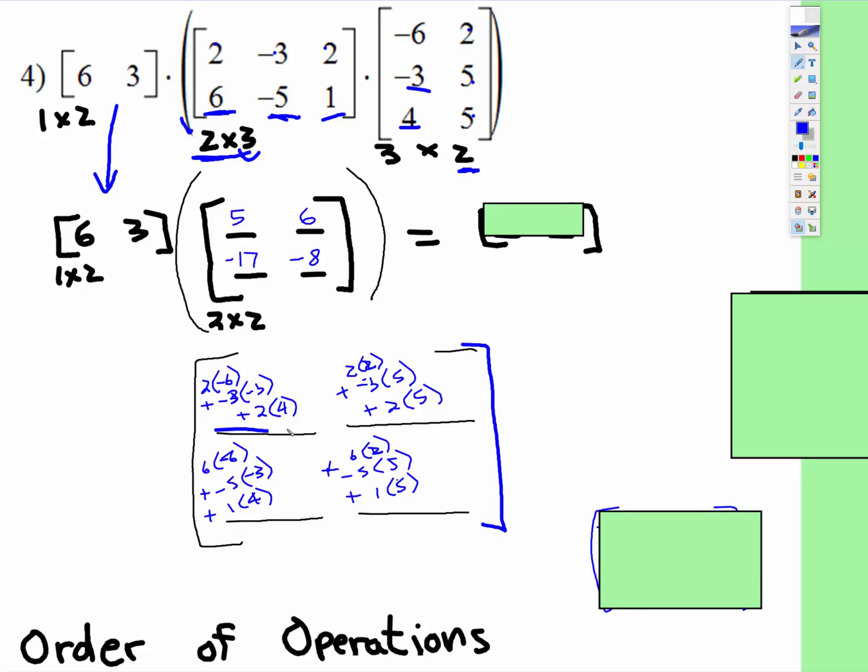So in this spot right here, it was two times negative six plus negative three times negative three plus two times four. You add all those products up. So negative 12 plus nine plus eight gives you five, which is right there. You do that for each one.